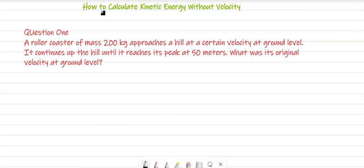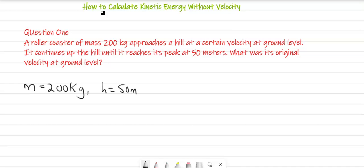A roller coaster that has a mass M equal to 200 kg approaches a hill, starting at ground level. It continues up the hill until it reaches its peak at 50 meters. This tells us that h, the height, is 50 meters.